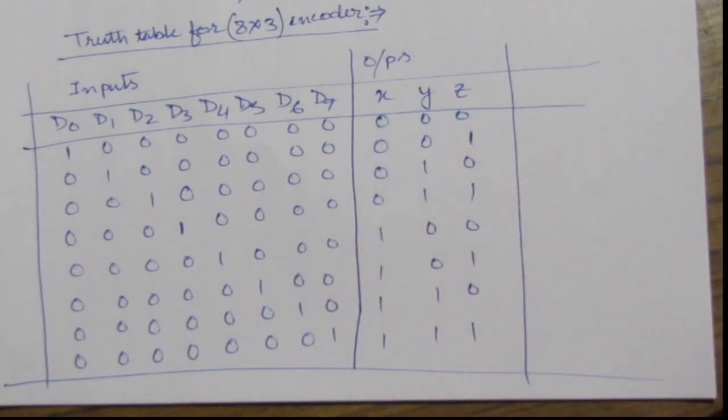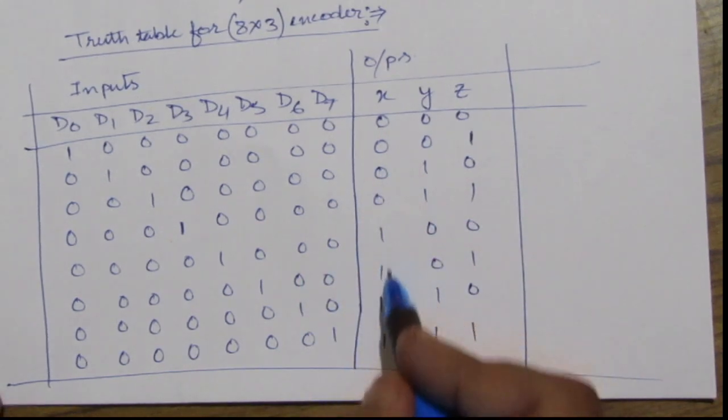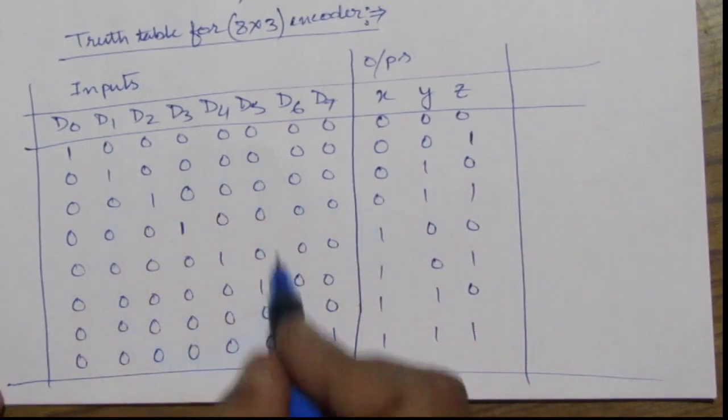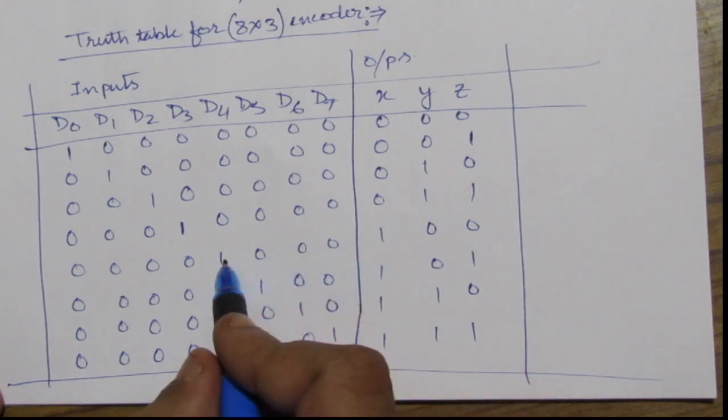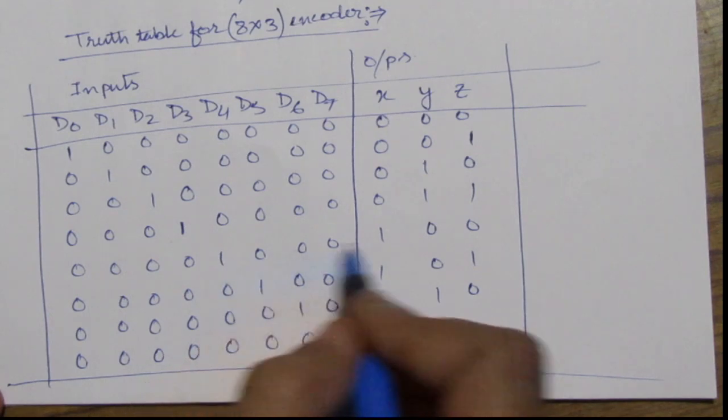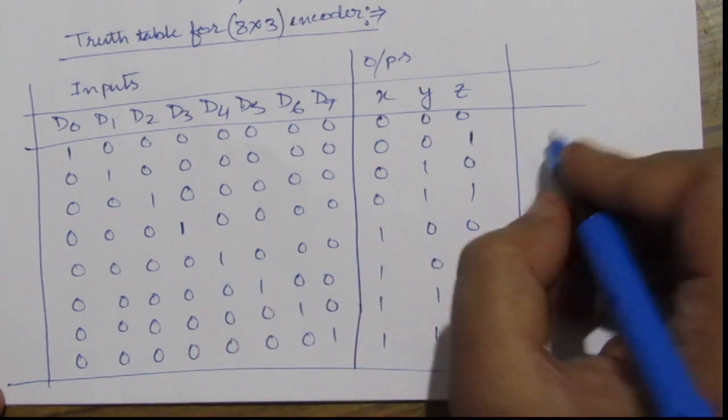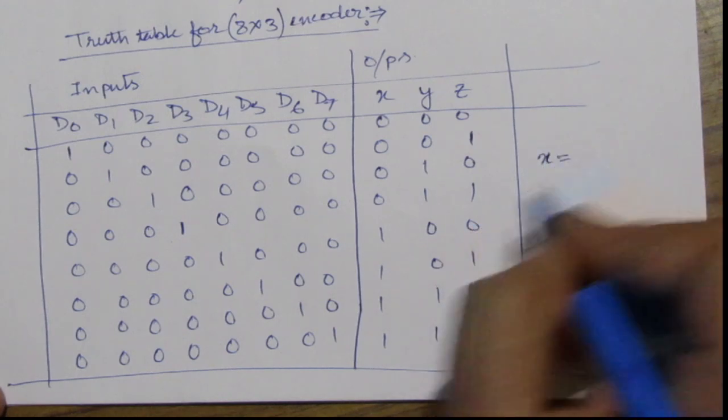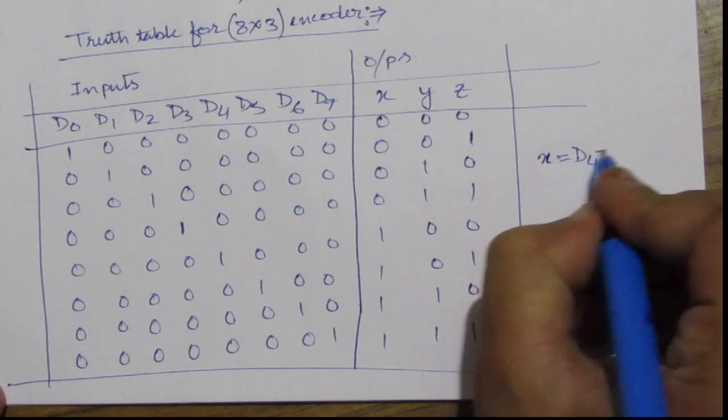So how we will find it? For this x term, whenever we have 1, we will check here in the input. Suppose this one is here. So for this one we will have d4 equal to 1. So we will write x equal to d4 plus,